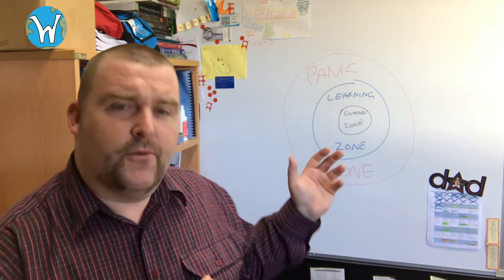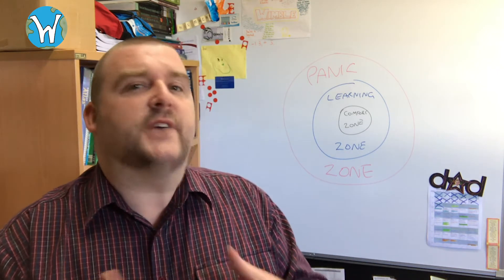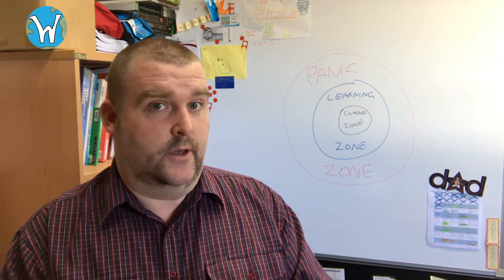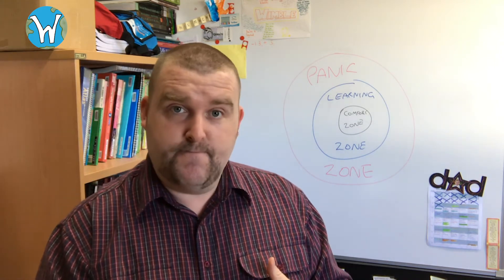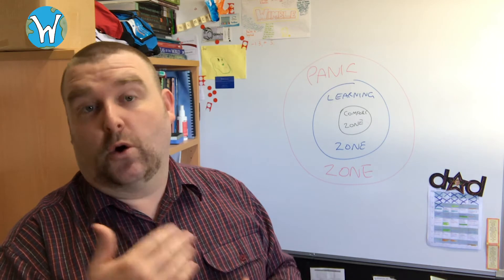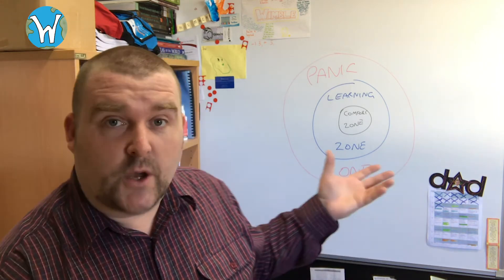Often, this is a helpful way for us to think about what's actually going wrong sometimes. There's three zones here and this is often called the Goldilocks zone.